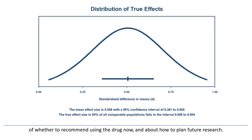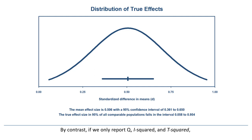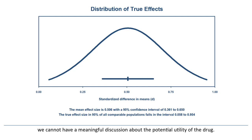The purpose of the prediction interval is to provide a basis for that discussion. If we report the prediction interval, then we all have a common understanding of how the effect size varies. And on that basis, we can have a meaningful discussion about whether to recommend using the drug now and about how to plan future research. By contrast, if we only report Q, I-squared, and tau-squared, we don't actually know how the effect sizes are distributed, and without a clear sense of how the effects are distributed, we cannot have a meaningful discussion about the potential utility of the drug.